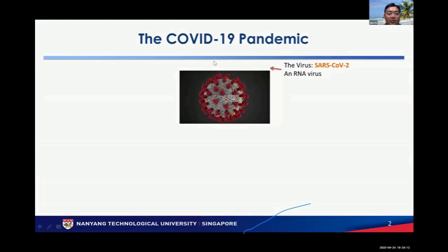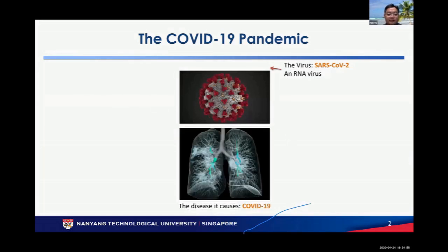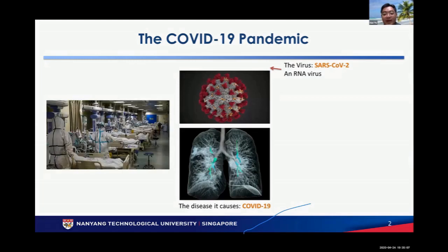Before we go into the details of AI technology, let me share some key concepts involved in this COVID-19 pandemic. When we talk about COVID-19, we're referring to the disease caused by the SARS-CoV-2 virus — Severe Acute Respiratory Syndrome Coronavirus version 2 — which is an RNA virus. The disease mainly affects your lungs. It's called COVID-19, Coronavirus Disease 2019, and it has made a significant negative impact on our healthcare systems and economy.